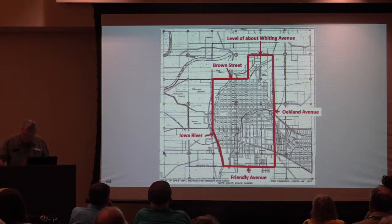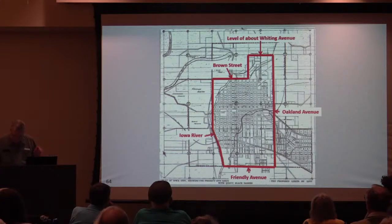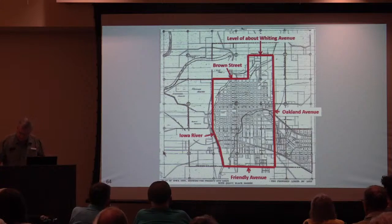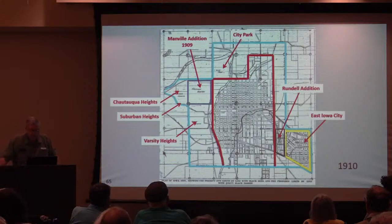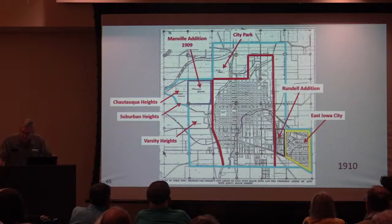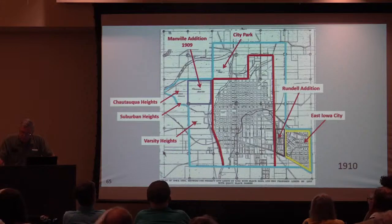This map appeared in a newspaper on March 16th, 1910. The voters of Johnson County went to the polls to decide if the boundaries of the city should be increased — if the measure passed, the city would double in size. Before the voting, the size of Iowa City was as shown here in red. The measure did pass, and the limits of the city were expanded to the blue lines, taking in all at once East Iowa City, the Rundle Additions, City Park, the Manville, Chautauqua, Heights, Suburban Heights, and Varsity Heights additions, and a lot of undeveloped land.